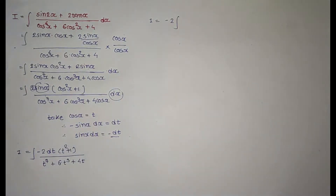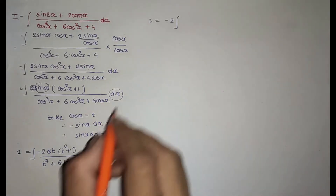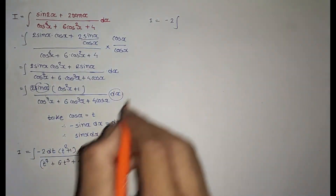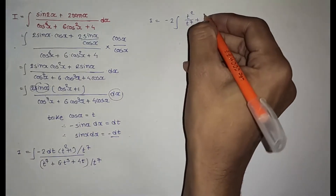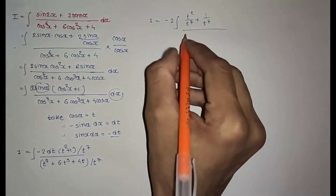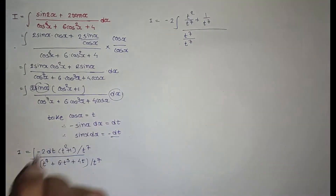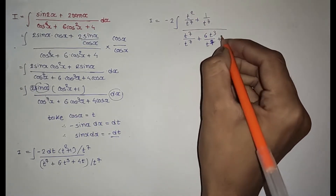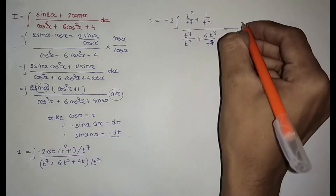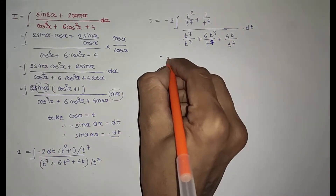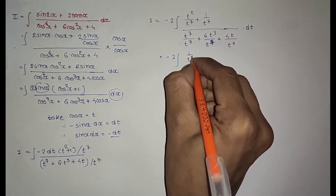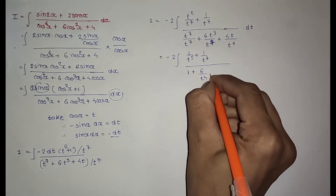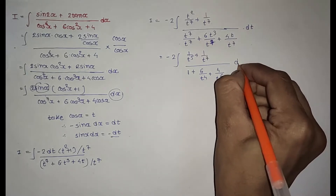So I equals minus 2 outside the integral. Now divide numerator and denominator by t^7: numerator becomes t²/t^7 + 1/t^7, and denominator becomes 1 + 6/t^4 + 4/t^6, giving integral of (1/t^5 + 1/t^7) divided by (1 + 6/t^4 + 4/t^6) dt.